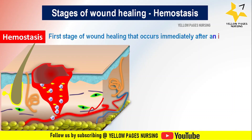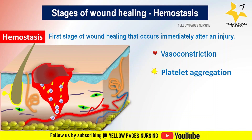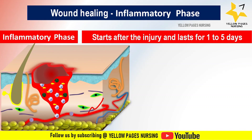First is hemostasis — this is the first stage of wound healing that occurs immediately after an injury. It involves vasoconstriction, which means constriction of blood vessels to reduce blood flow. Platelets aggregate at the site of injury and form a blood clot (thrombus) to stop bleeding. Clotting factors help strengthen the clot and the wound begins to stabilize.